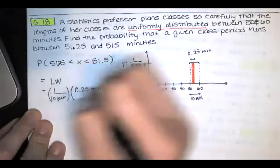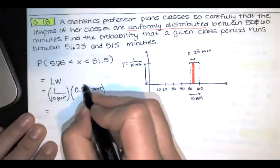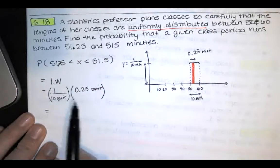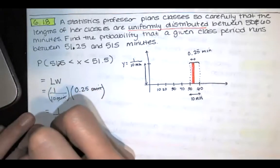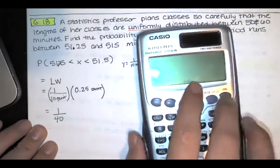Now if we multiply those together, the minutes reduce. And you end up with, this is 1 over 4. So you have 1 over 4 times 1 over 10. That's 1 over 40. Or if you prefer a decimal, and I do.